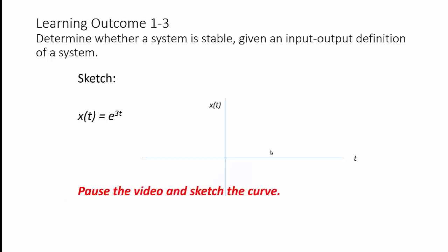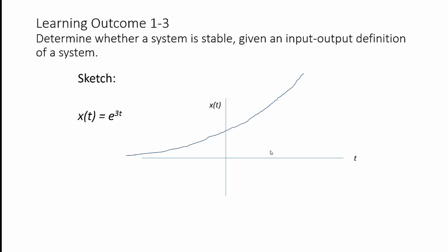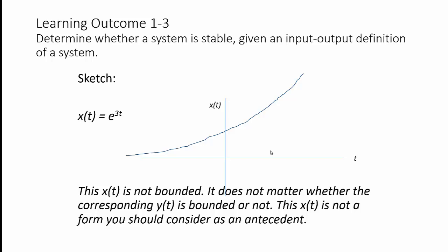Consider this possible input signal x(t) = e^(3t). Please pause the video and sketch what this curve looks like — you should know this from your prerequisite courses. This signal is not bounded, because it goes up to infinity as t goes to infinity. If this were the input signal being input into a system, it does not matter whether the corresponding y(t) is bounded or not. You should not consider this sort of signal when determining whether a system is stable.